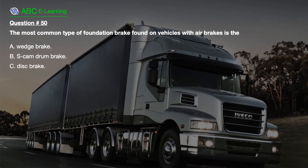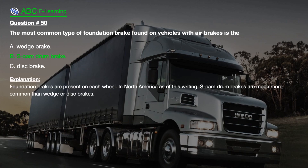Question number 50. The most common type of foundation brake found on vehicles with air brakes is the: A. Wedge brake. B. S-cam drum brake. C. Disc brake. The correct answer is B. S-cam drum brake. Explanation: Foundation brakes are present on each wheel. In North America, as of this writing, S-cam drum brakes are much more common than wedge or disc brakes.